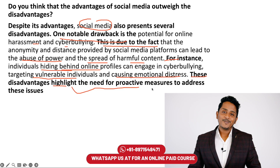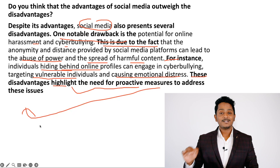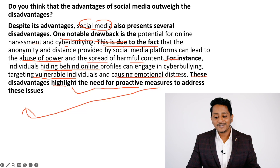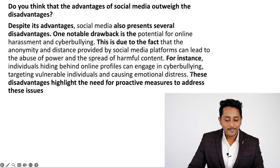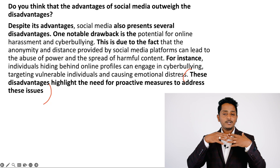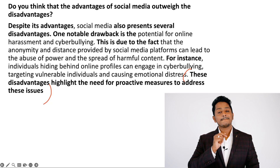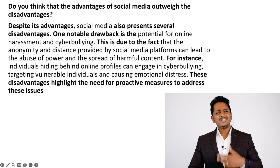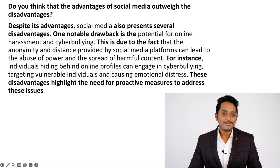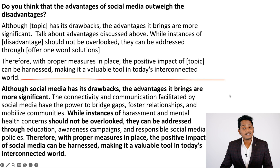'These disadvantages highlight the need for proactive measures to address these issues.' This line connects to the next paragraph, which says these issues can be addressed — so the disadvantage is not that impactful. The fourth paragraph is very very important for proving advantage outweighs disadvantage, and the template words here act like a bridge. You're notifying the examiner that there are disadvantages which need to be addressed, and then in the next paragraph you show how to address them.